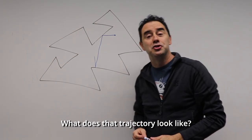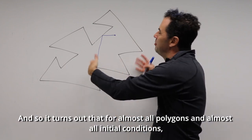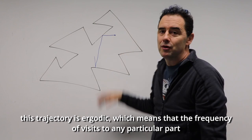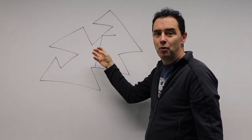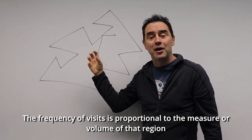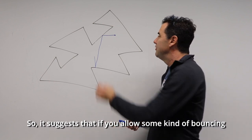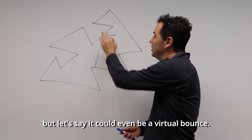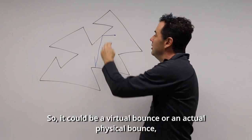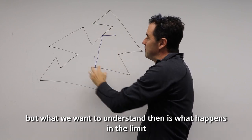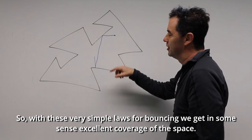The trajectory continues forever, and I want to ask: is it periodic, or does it hit every open set inside the space? It turns out that for almost all polygons and almost all initial conditions, this trajectory is ergodic — meaning the frequency of visits to any particular part of the configuration space, considering position and orientation, is proportional to the measure or volume of that region regardless of its shape or location. This is an asymptotic result, and it suggests that if you allow some kind of bouncing, you get excellent coverage of the space.